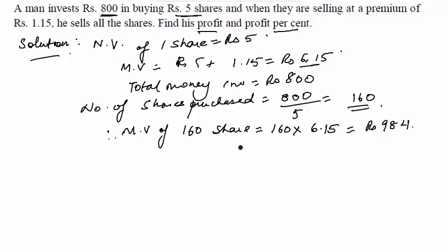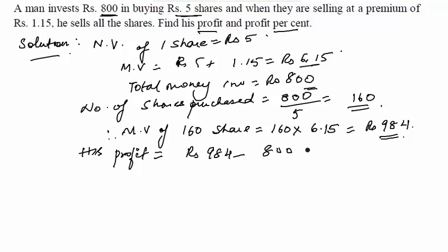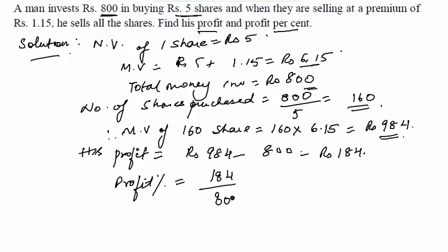Now we need to find his profit and the profit percent. Profit equals the market value of 160 shares minus the total money invested. So the man's profit equals rupees 984 minus rupees 800, which comes out to be rupees 184. Therefore, profit percent equals profit divided by total money invested into 100, which comes out to be 23 percent. Hence we get our answer.